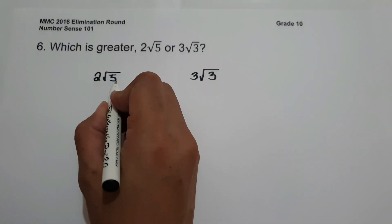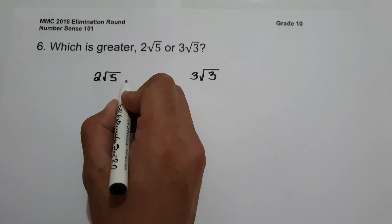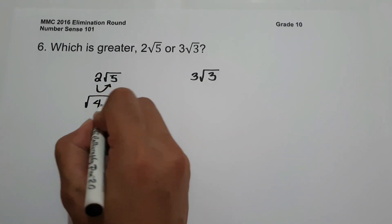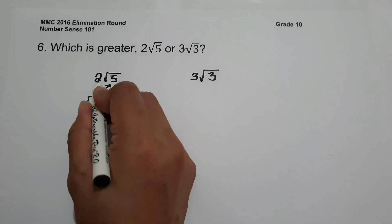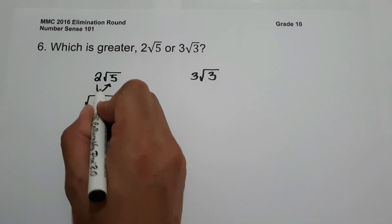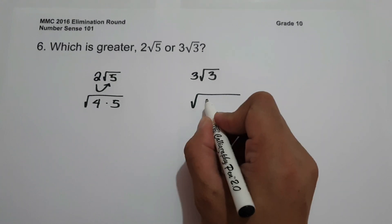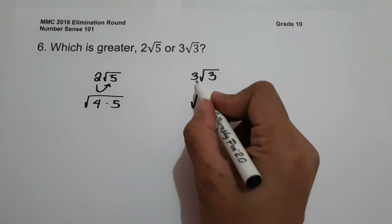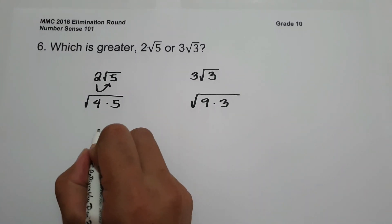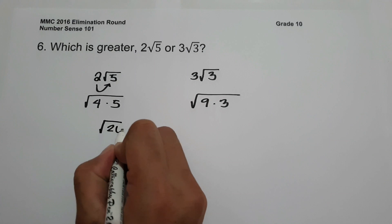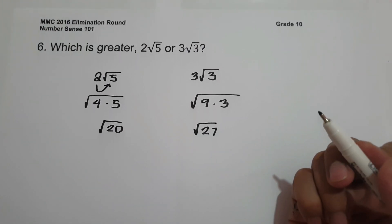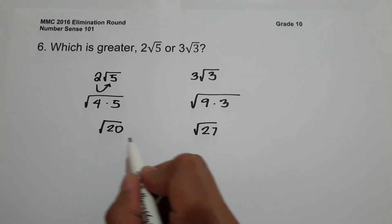Let us write 2 square root of 5 in the form of a radicand. Writing 2 inside the radicand gives us 4 times 5 — since 2 multiplied by itself is 4, and the square root of 4 gives us 2. On the other side, 3 multiplied by itself is 9, giving us 9 times 3. So 4 times 5 equals 20, giving us square root of 20, and the other side gives square root of 27. Definitely, square root of 27 is greater than square root of 20.